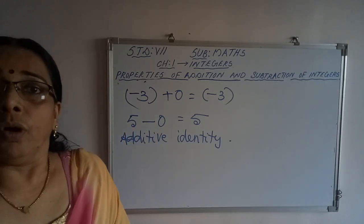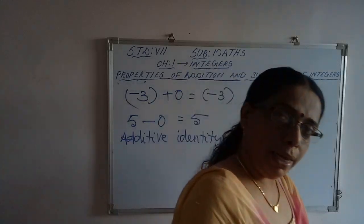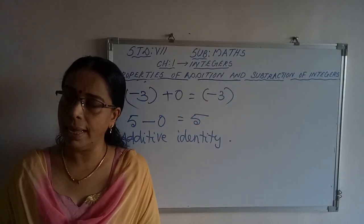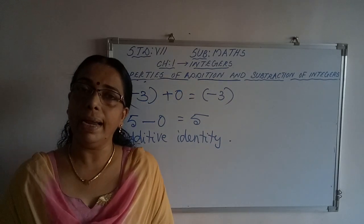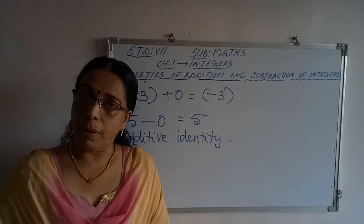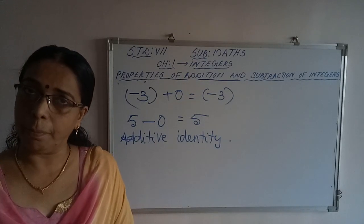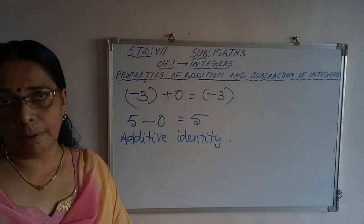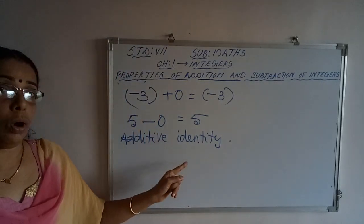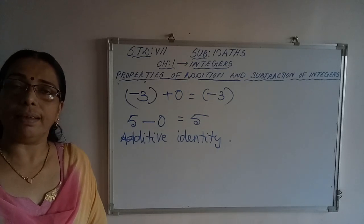So these are the four properties of addition and subtraction of integers. First: closure property — when you add two integers or subtract one integer from another, the result is another integer. Second: commutative property — integers can be added in any order. Third: associative property — if more than two integers are given, they can be grouped in any order and added; the result will be the same. And the last property: additive identity — if you add 0 to any integer, the result will be the same integer. Zero is the additive identity.